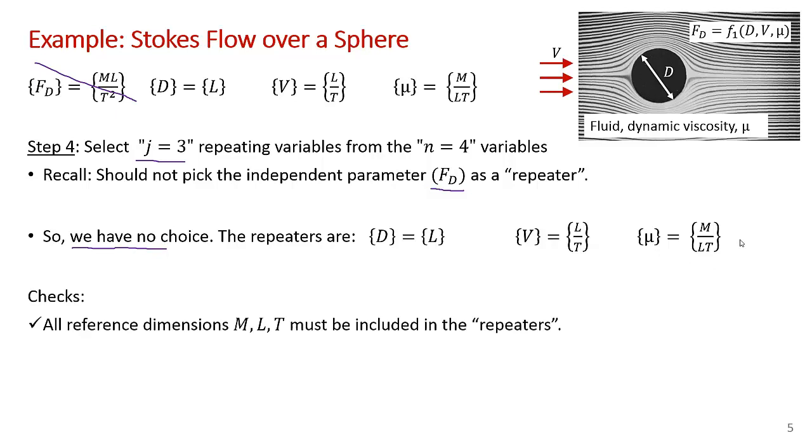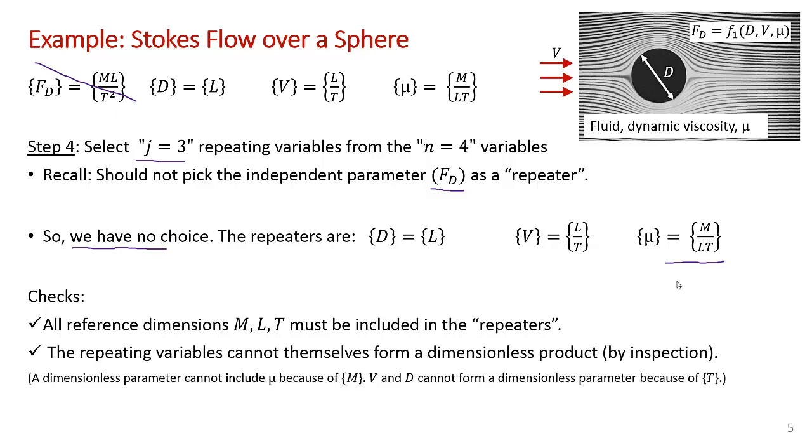Nevertheless, we should check the rules. We have to check that all the reference dimensions are included in those three repeaters. Indeed, dynamic viscosity has all three just on its own. And you have to check that the repeating variables themselves cannot form a dimensionless product. I showed in a previous video a rigorous way of demonstrating that. But in this case, you can actually see by inspection.